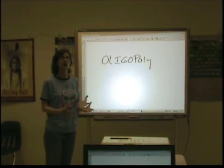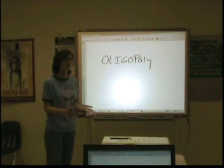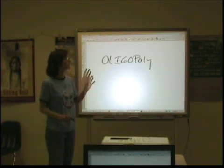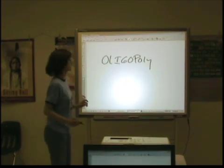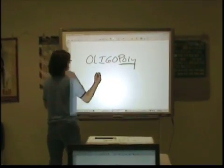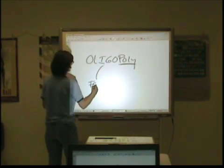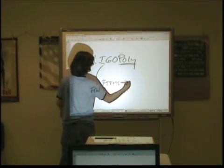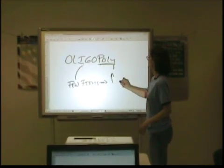Just like monopolistic competition, you want to look at product differentiation and having some price control. The defining characteristic of an oligopoly is that the largest firms are the ones basically controlling the market. The biggest deal is that you have a few firms with a very high degree of control.